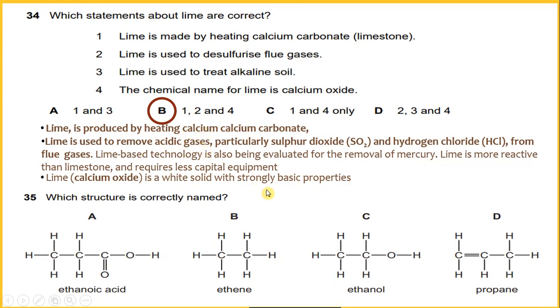Which structure is correctly named? Refer to chapter alcohol and carboxylic acid. C is actually the correct answer, the correct name for ethanol.